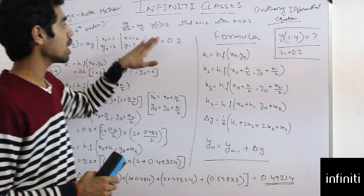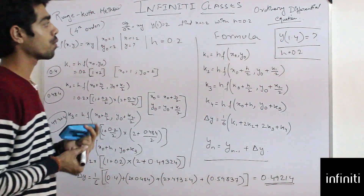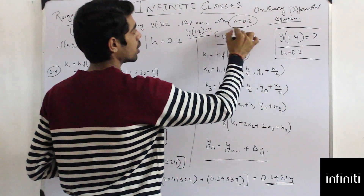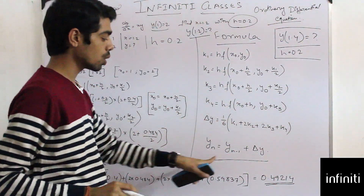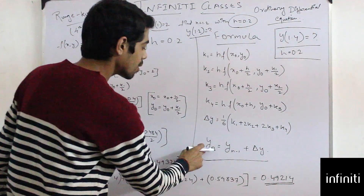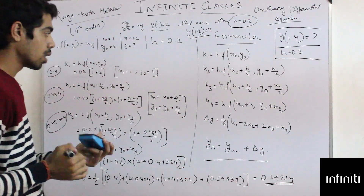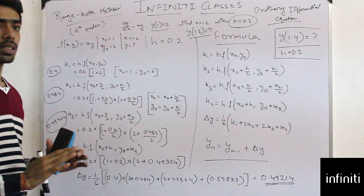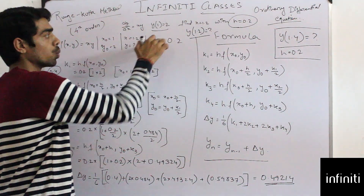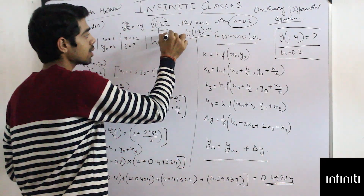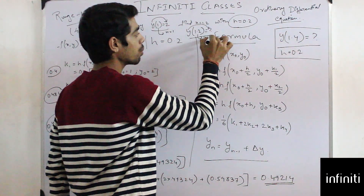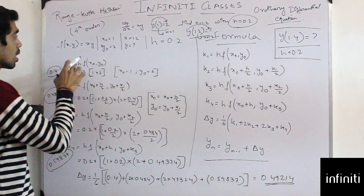We need to find y(1.2), i.e., y at x = 1.2, with an interval gap of h = 0.2. The given differential equation is dy/dx = xy. We are given y(1) = 2, meaning y = 2 when x = 1. We can write f(x, y) = x · y. So x₀ = 1, y₀ = 2, and h = 0.2.